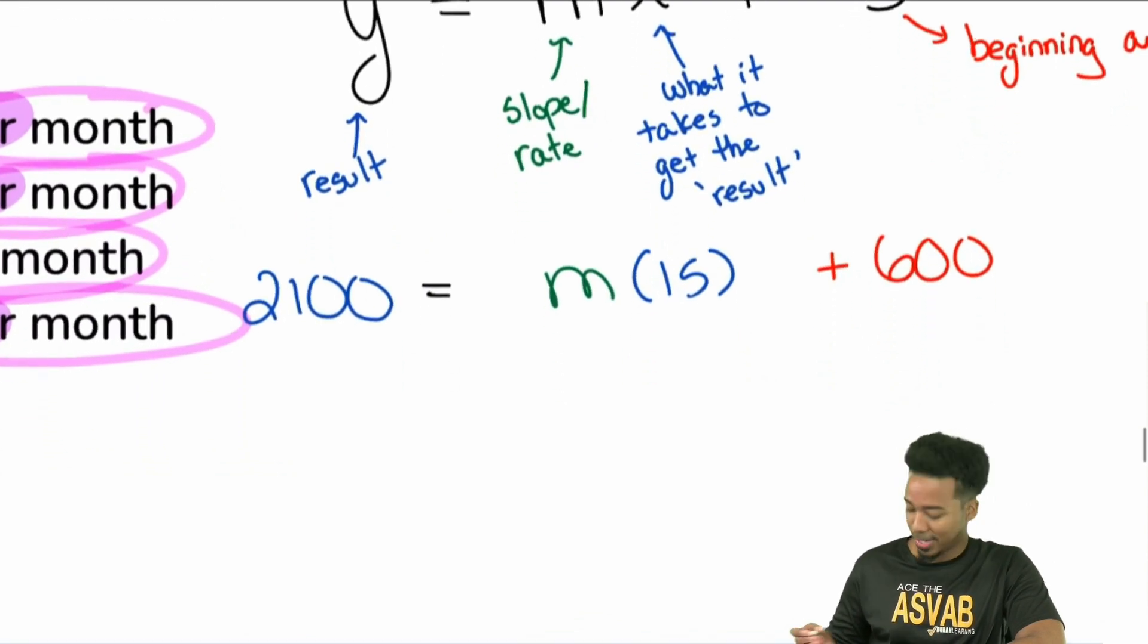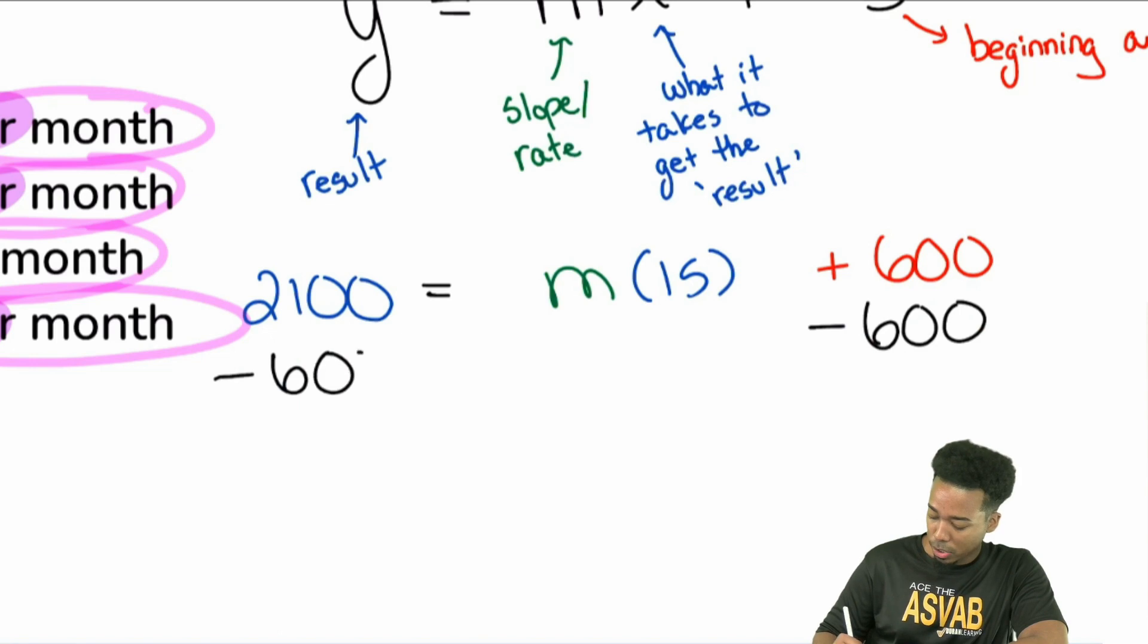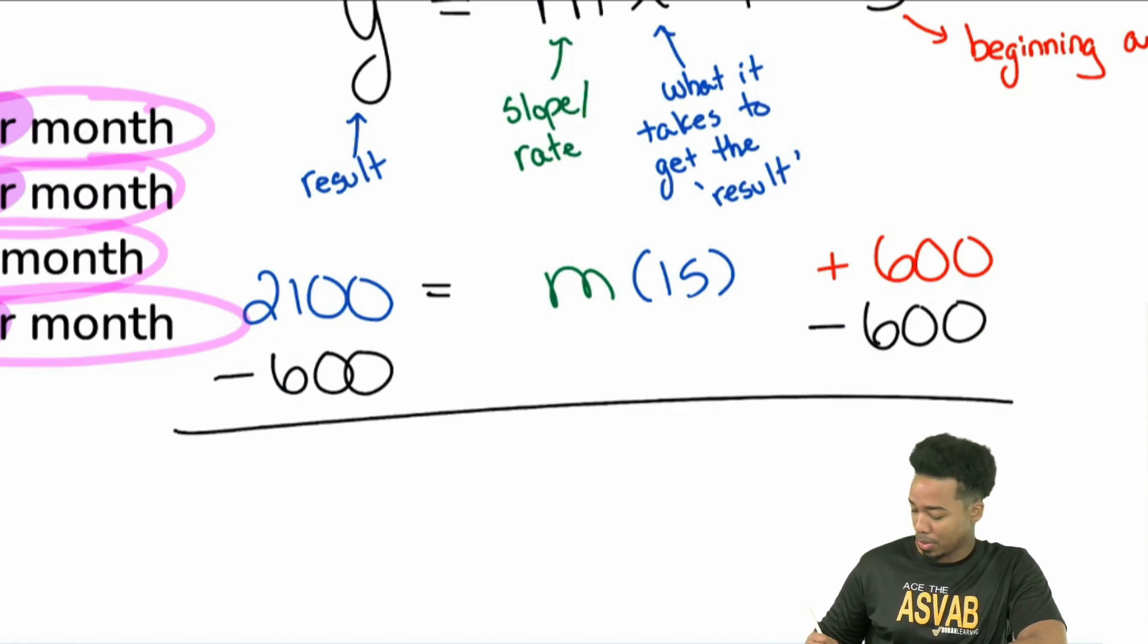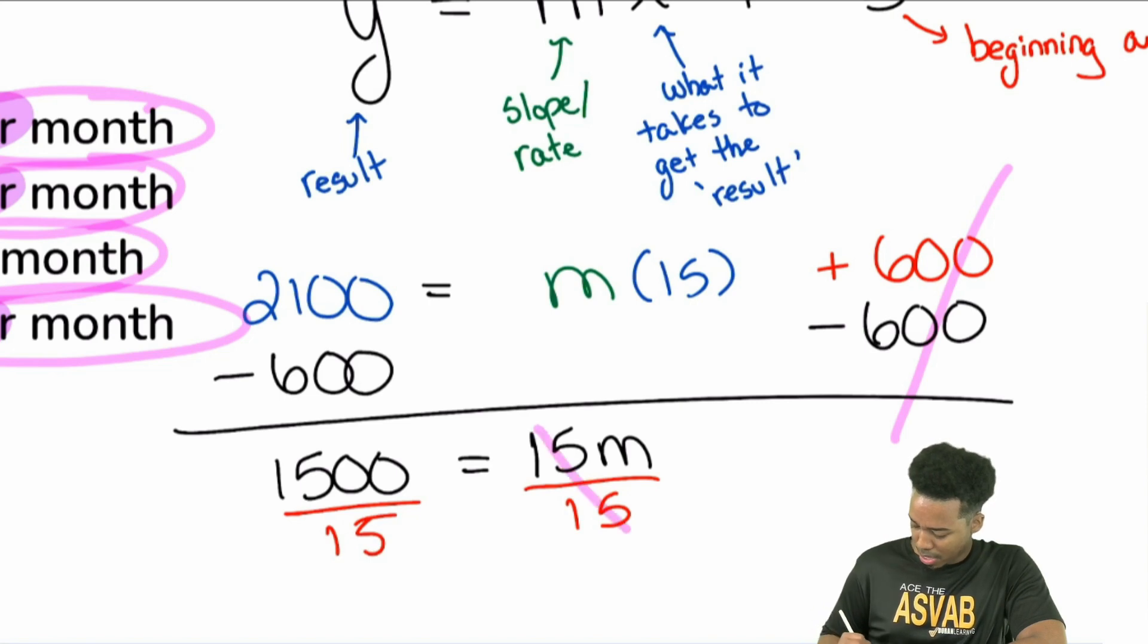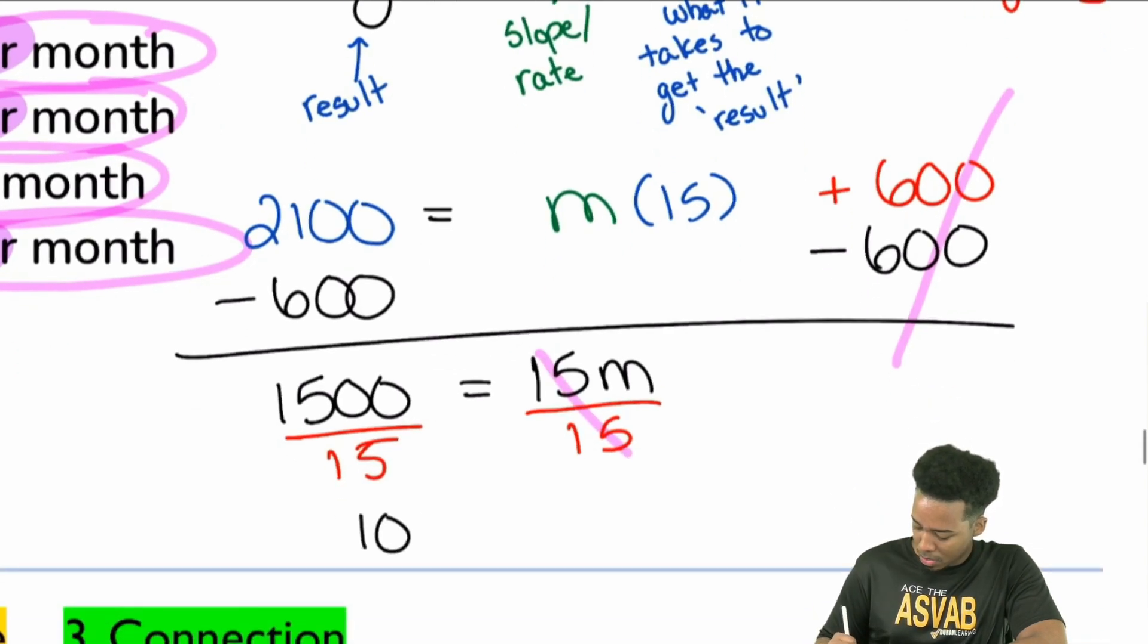All we've got to do is solve this. Step one, subtract $600 from both sides. Once we actually have the setup, this is actually super easy. Because you do that, boom, gone. And then here we have $1,500. M times 15 is the same thing as saying 15m. We divide both sides by 15, and look at that. Booyah. And that's going to end up being $100 equals m.